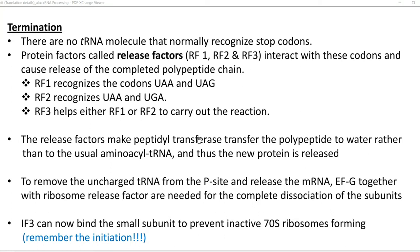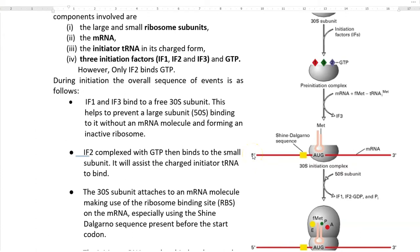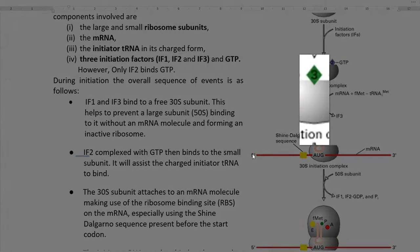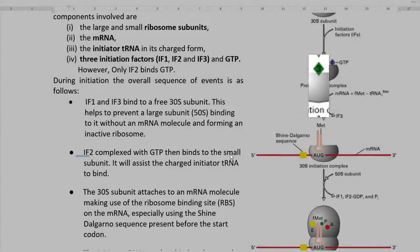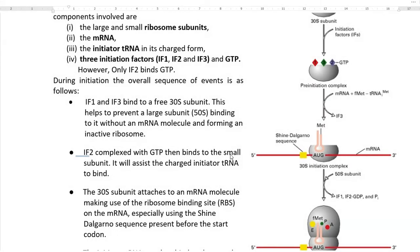The initiation factor 3 can bind to the small subunit of the ribosome, that is the 30S subunit, thereby preventing the formation of an inactive 70S ribosomal unit. After joining of initiation factor 3 to the small subunit, the initiation process will start back again.